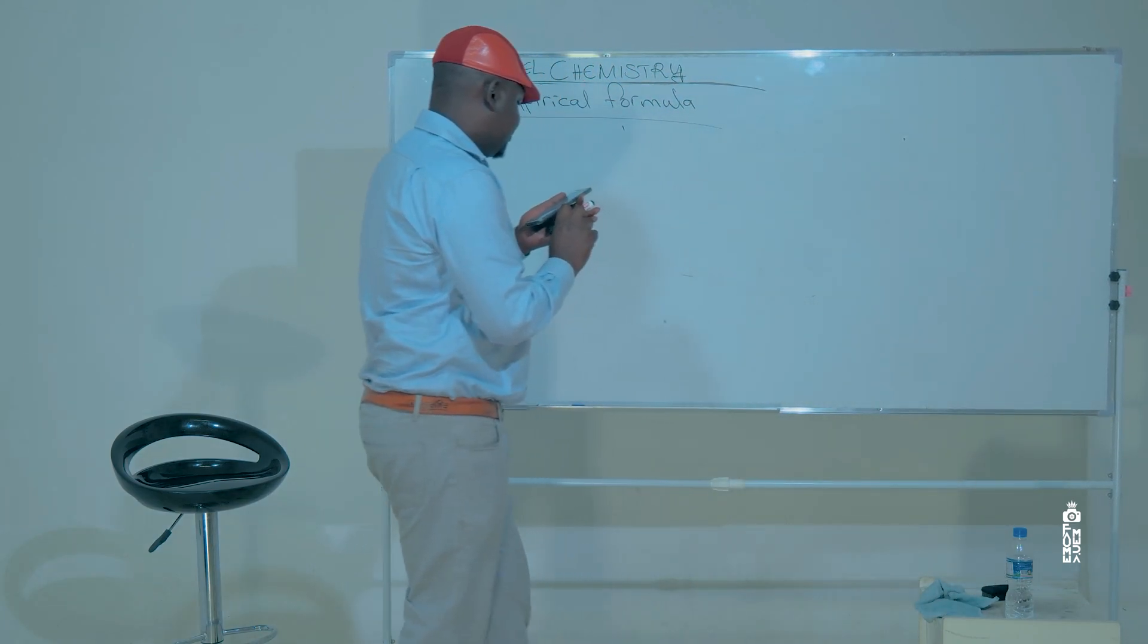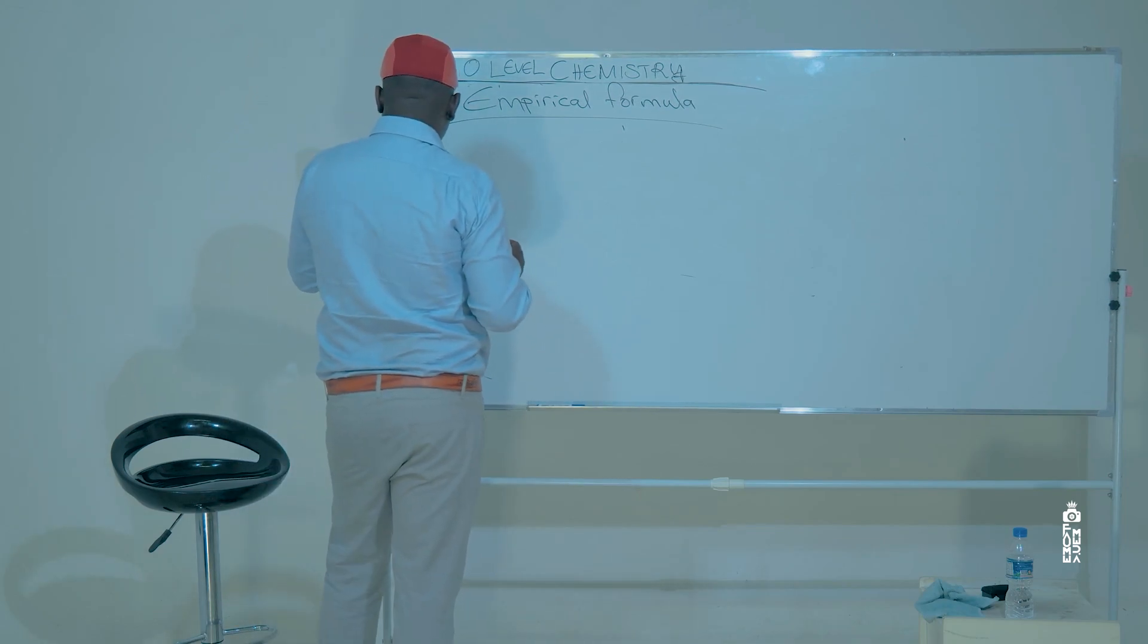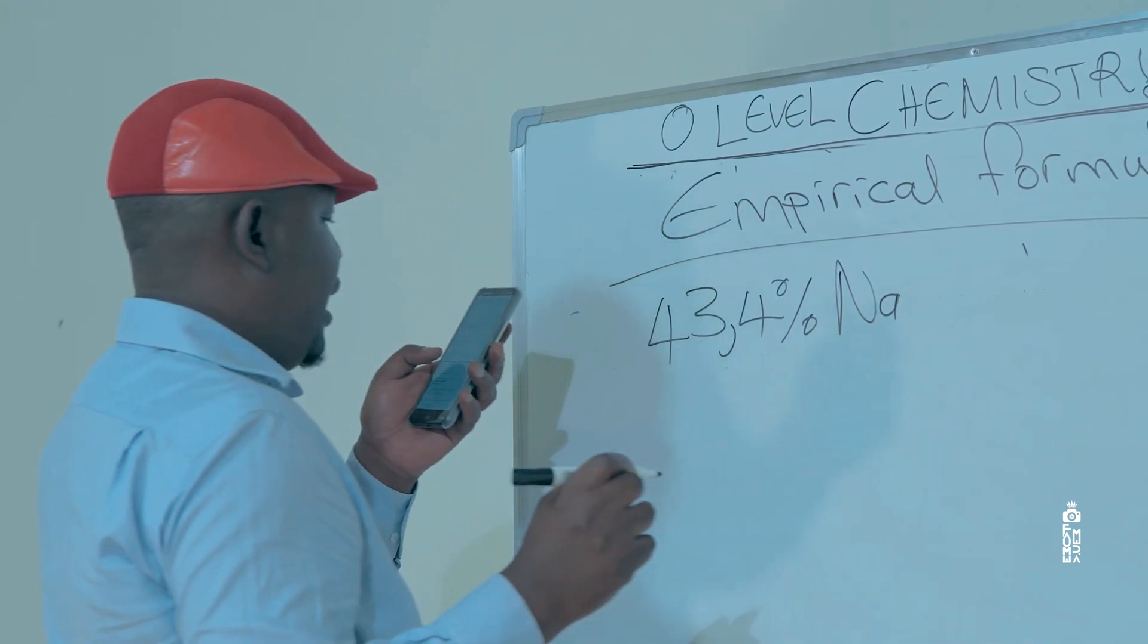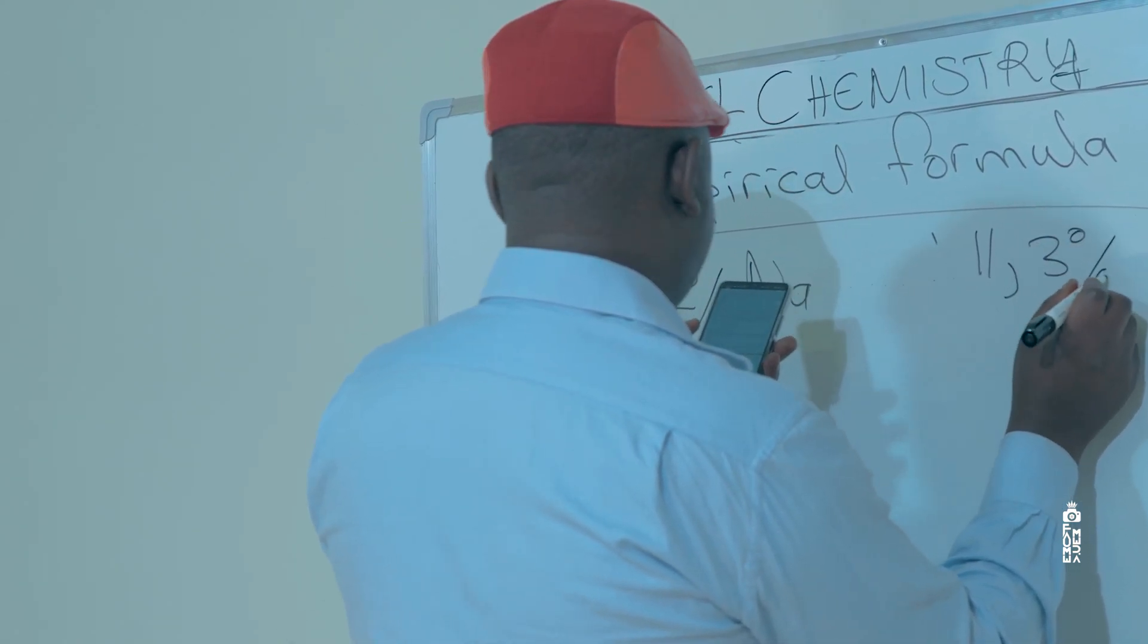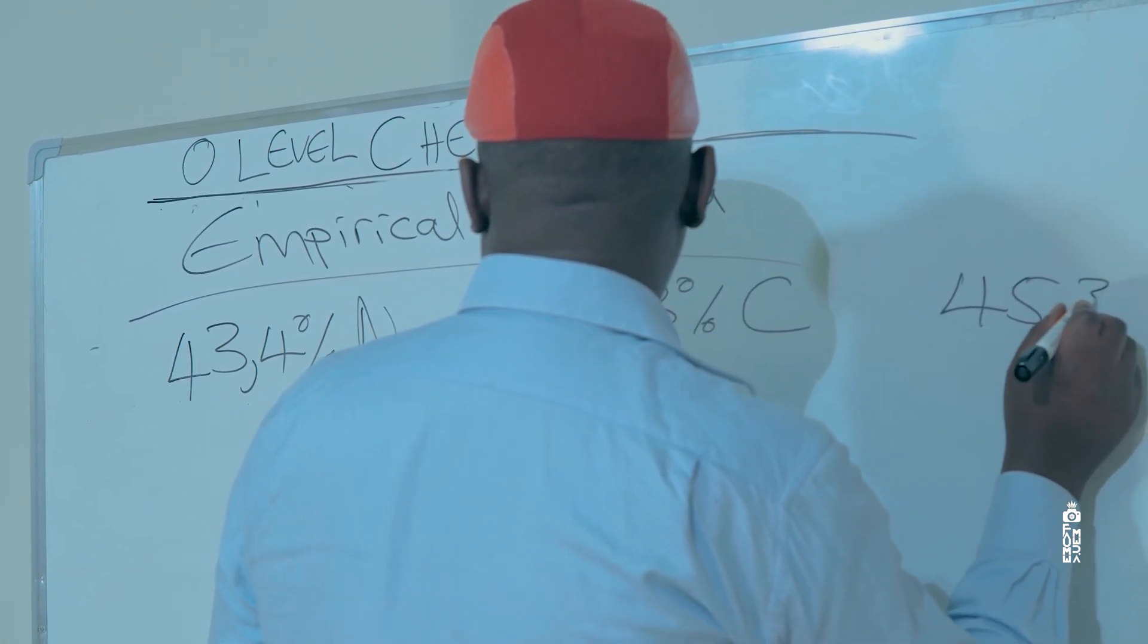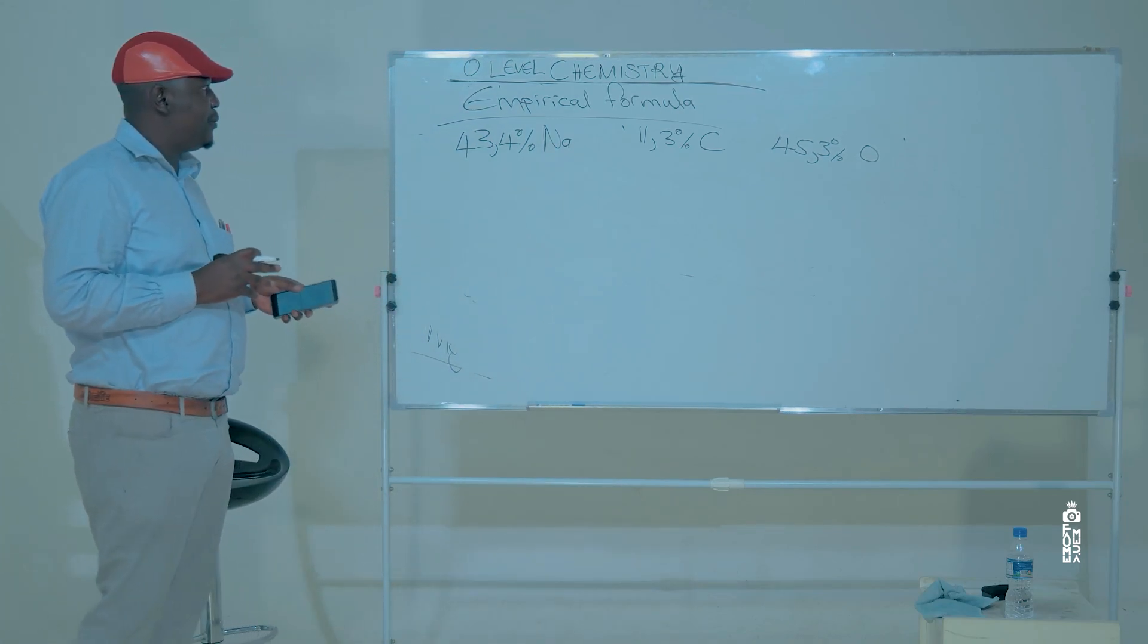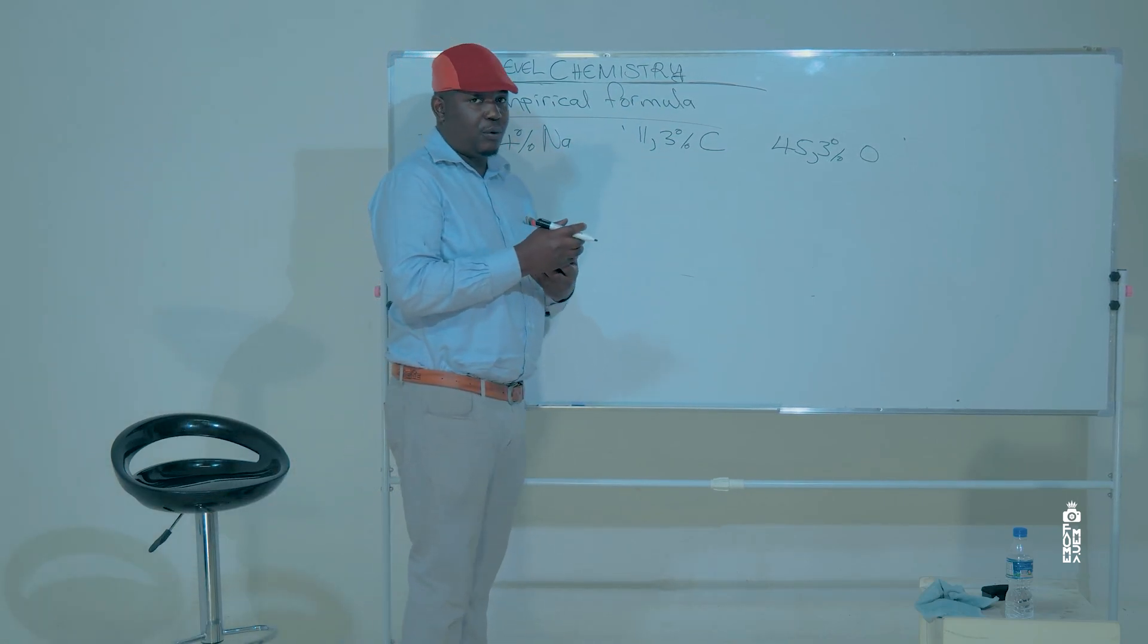We are given the following percentage compositions by mass: we have 43.4% of sodium, 11.3% carbon, and 45.3% oxygen, and then we are required to calculate the empirical formula for the compound which contains the following elements by these percentage compositions.